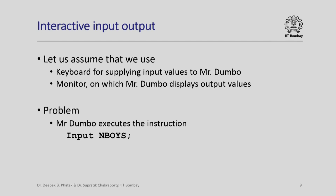Observe that when Mr. Dumbo has to do interactive input output, he will have to interact with us. We have to give input by using some device and we have to collect output by using some other device. What devices should we use? Just as we designed an artificial set of drawers for the memory of Mr. Dumbo and designed the workbench, we could design something arbitrary. However, it makes sense to use a normal keyboard of a computer for supplying input values to Mr. Dumbo and a normal monitor of a computer on which Mr. Dumbo will display the output value. This makes eminent sense because we are familiar with both these devices — after all, you are all using these devices for learning this course.